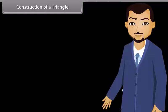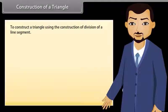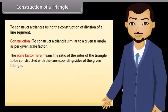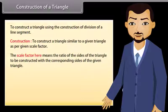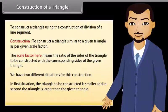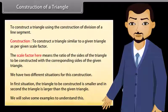Now let us learn the construction of a triangle. We will learn to construct a triangle using the construction of division of a line segment. To construct a triangle similar to a given triangle as per a given scale factor — the scale factor means the ratio of the sides of the triangle to be constructed with the corresponding sides of the given triangle. We have two situations: the triangle to be constructed is smaller, or larger than the given triangle. We will solve some examples to understand this.